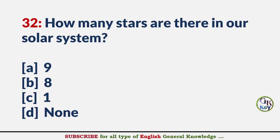How many stars are there in our solar system? Answer C: One.